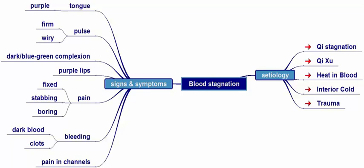With blood stagnation, the tongue takes on a more purple colour and the pulse becomes firm and wiry. The lips can also take on a purple tinge in severe cases of blood stagnation. Stagnant blood can also cause pain which may be described as stabbing or a deep, boring pain. The pain is usually in a fixed position due to the stagnation where the blood isn't moving.